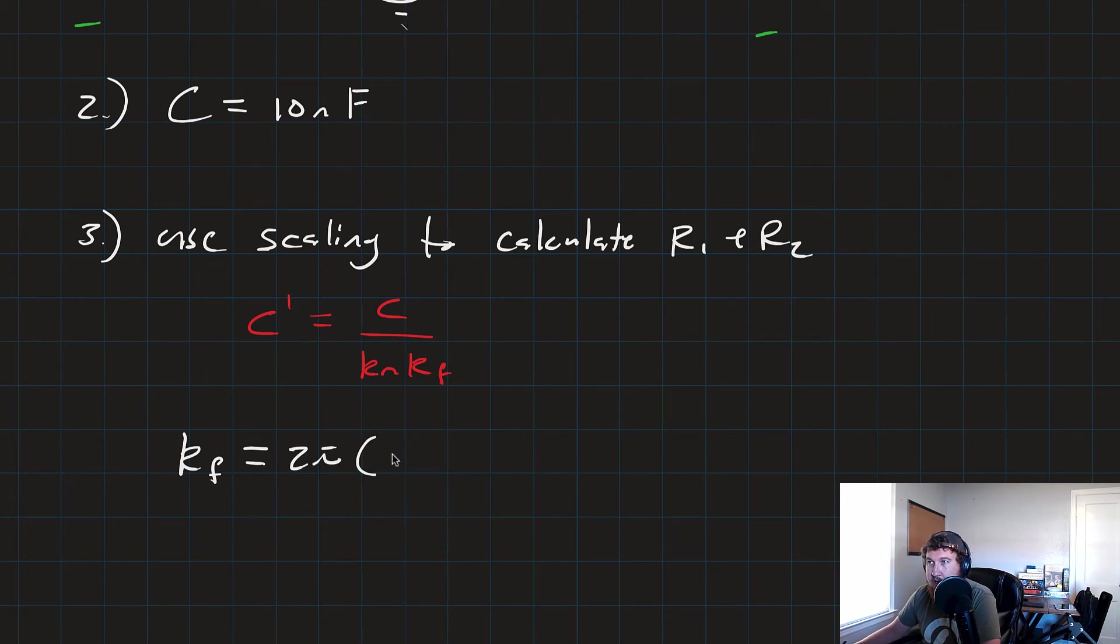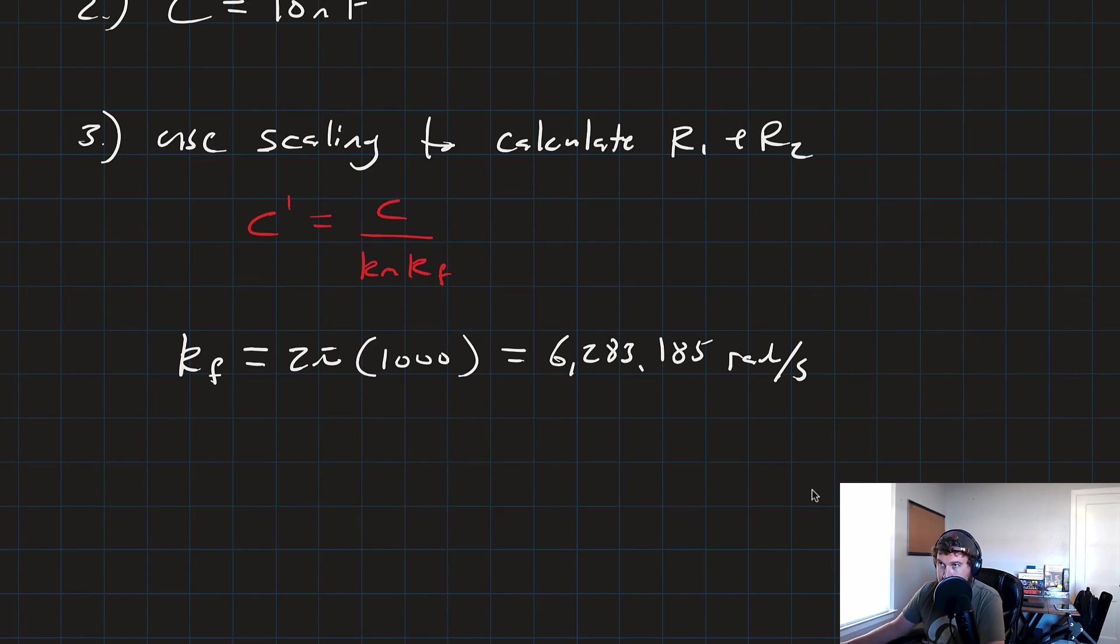So that's just going to be 2 pi times 1 kHz, which is 1,000, and that's going to be equal to 6,283.185 radians per second. We also know that our desired value for capacitance, C prime, is equal to 10 nanofarads, 10 times 10 to the negative 9 farads.